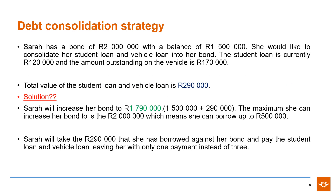Sarah has a bond of R2 million and two other outstanding loans with a combined value of R290,000. She would like to consolidate the smaller loans into her current bond. Sarah will increase her bond to R1.79 million — that's her outstanding balance of R1.5 million, plus the combined value of the short-term debt. She will borrow the R290,000 against her bond to pay off the student loan and the vehicle loan, leaving her with one payment instead of three every month.